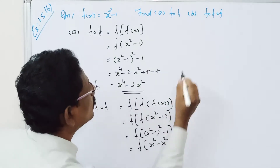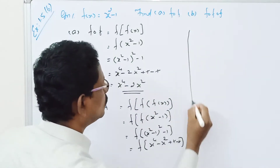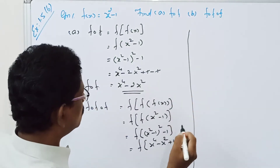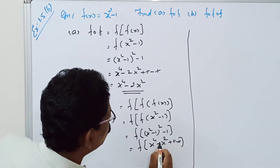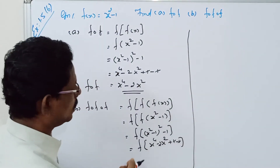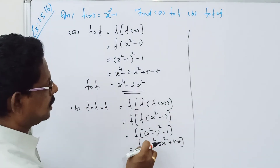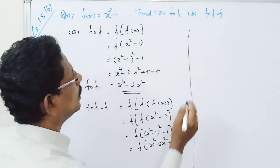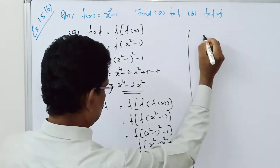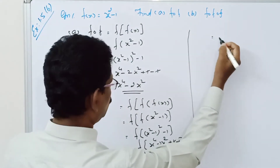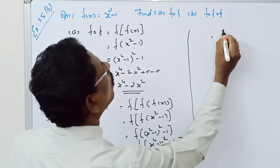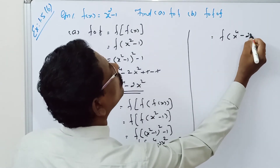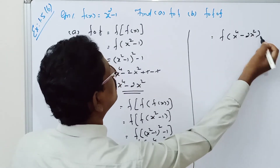The plus 1 and minus 1 cancel. So here it is 2x squared. Using a squared plus 2ab plus b squared, it is equal to f of x to the power 4 minus 2x squared.